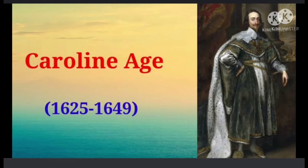John Milton began his writing during the Caroline age. It was also the time of the religious poet George Herbert and of the prose writers Robert Burton and Sir Thomas Browne. Associated with the court were the Cavalier poets — the writers of witty and polished lyrics of courtship and gallantry. The group included Richard Lovelace, Sir John Suckling, and Thomas Carew.